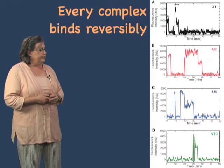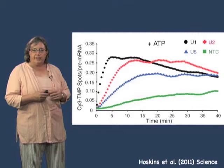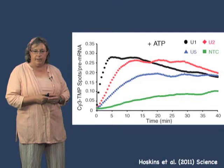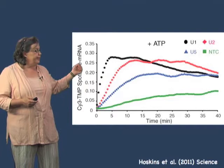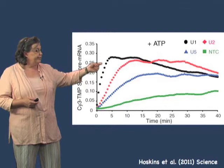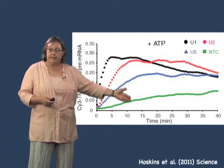If we count up the total number of spots in each frame and plot the number of dyes per pre-mRNA molecule, you can see now in the presence of ATP, U1 builds up first, then U2, then U5, and then the NTC after that. This gives us an apparent ordered process for spliceosome assembly.